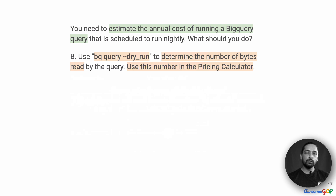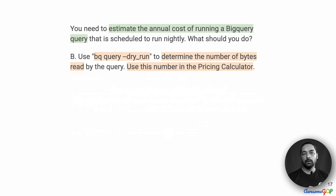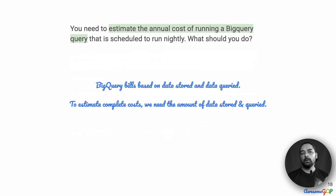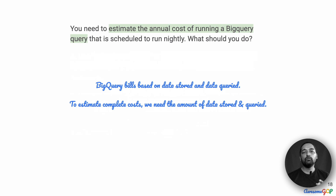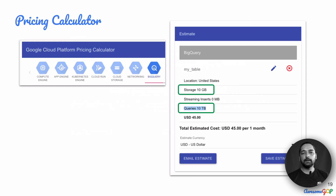How about option B, which suggests that we do a bq query dry run? First we determine the number of bytes read by using the dry run option, and then add this to the pricing calculator. What are we billed based on? It is going to be the data used — the data involved — which is both stored and queried. So to get the complete costs, we need an estimate of both of them. Does the pricing calculator give us a way to estimate combining both? The answer is yes.